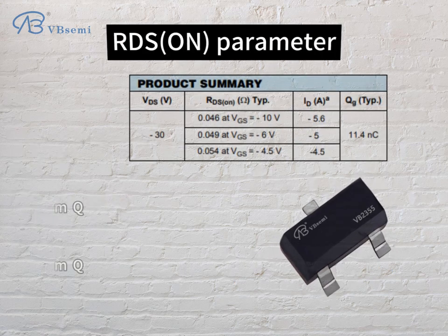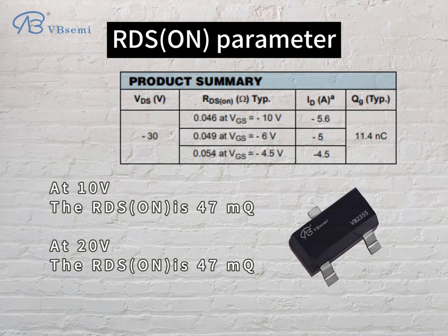RDS on parameter: at 10V the RDS on is 47mΩ; at 20V the RDS on is 47mΩ.